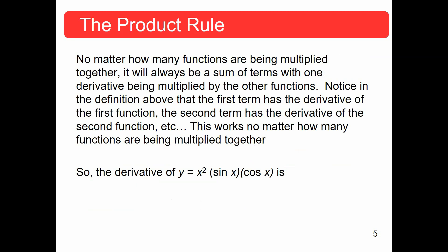Let's do an example. We've got y = x²·sin(x)·cos(x). Notice this is three different functions of x. So y' equals the derivative of the first — the derivative of x² is 2x — times the other two: sin(x)·cos(x), plus the derivative of the second — the derivative of sin(x) is cos(x) — times x² times cos(x), plus the derivative of cos(x), which is −sin(x), times sin(x) and x².